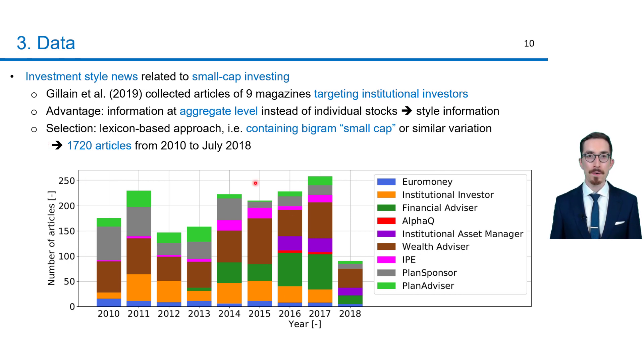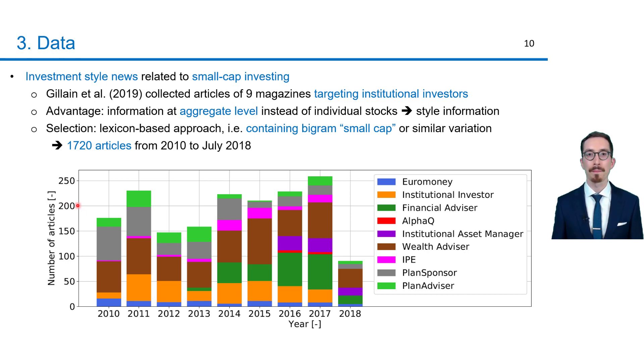This figure shows the resulting number of articles from each magazine during this period. In total, it's about 200 per year.